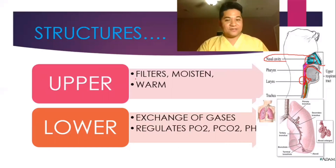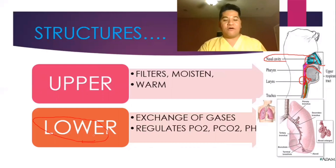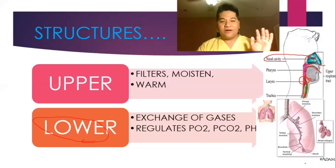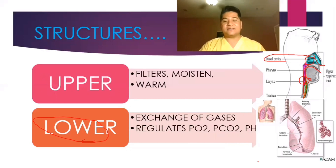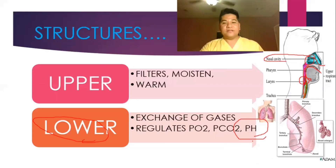The upper respiratory tract filters air from your nostril — the nasal hairs moisten and warm the air. When it reaches the lower part of the respiratory system, gas exchange occurs, especially at the alveoli, which is the functional unit of the respiratory system. It regulates the levels of oxygen, carbon dioxide, and pH — the acidity — which relates to your blood gases.